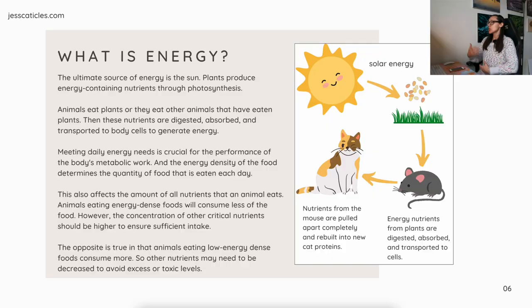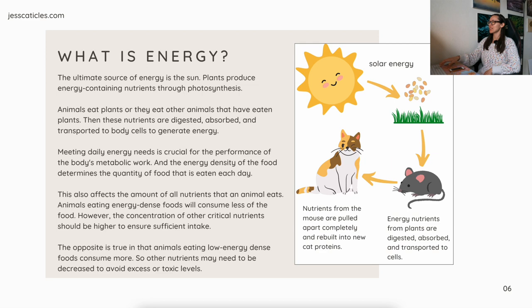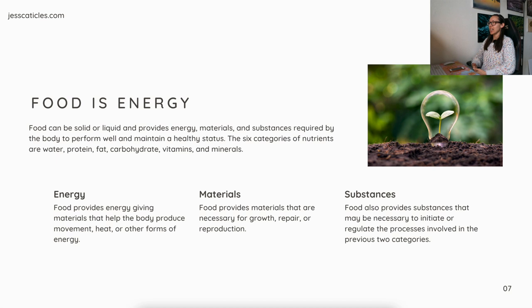On the right we have a cute little sun producing solar energy. The plants absorb it and turn it into energy-containing nutrients, then the mouse eats the plants. Energy nutrients from plants are digested, absorbed, and transported to the cells. Then this cute cat eats the mouse. Nutrients from the mouse are pulled apart completely and rebuilt into new cat proteins. So what is energy? Food is energy. Food can be solid or liquid and provides energy, materials, and substances required by the body to perform well and maintain a healthy status.